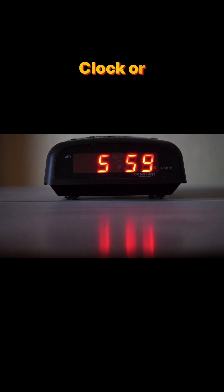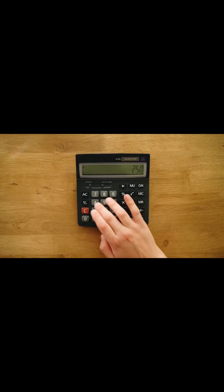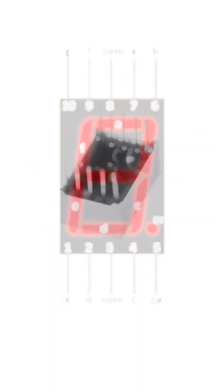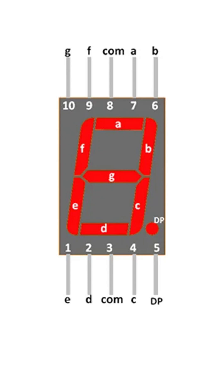Have you seen glowing numbers on a digital clock or calculator? That's a 7-segment display, a simple way to show digits from 0 to 9. A 7-segment display is made of 7 LEDs named A to G and one extra dot called DP.